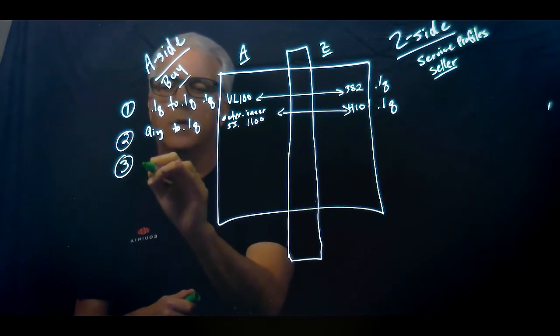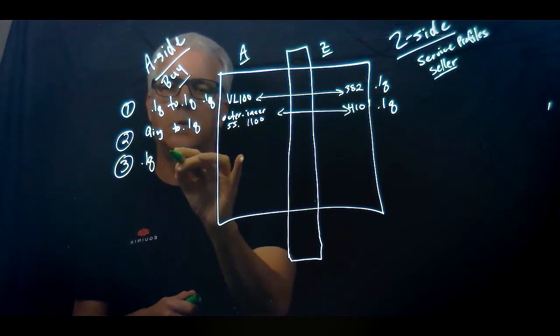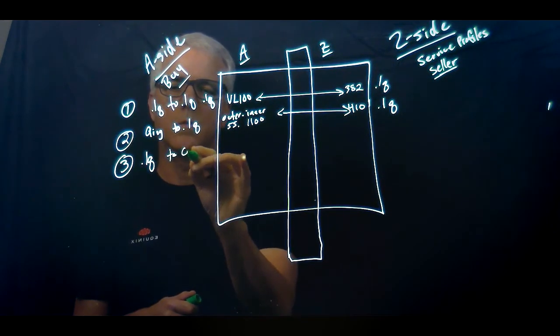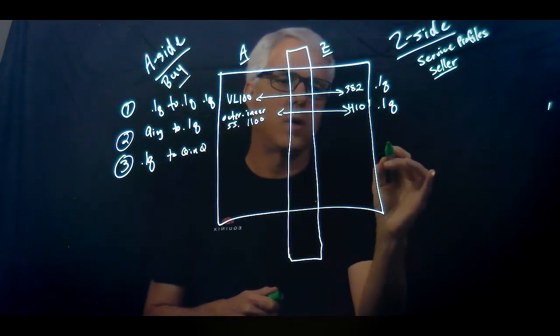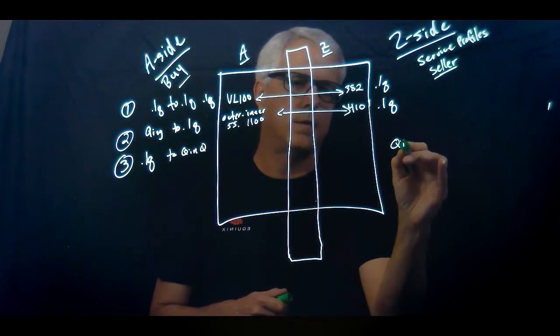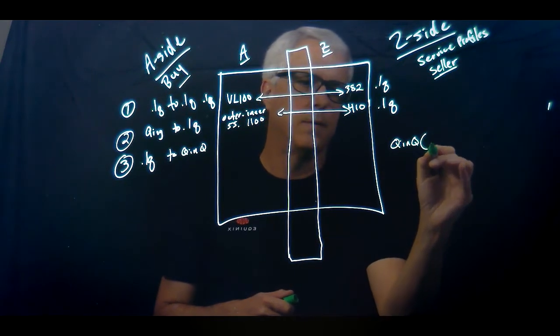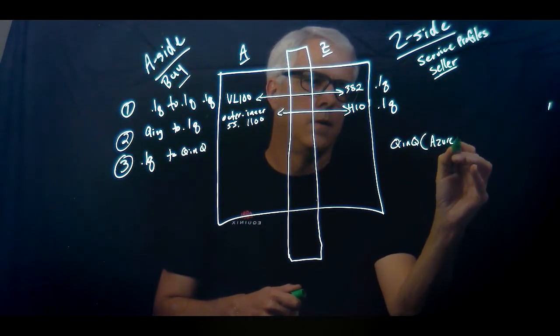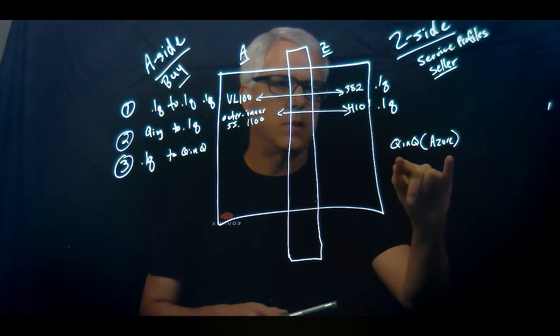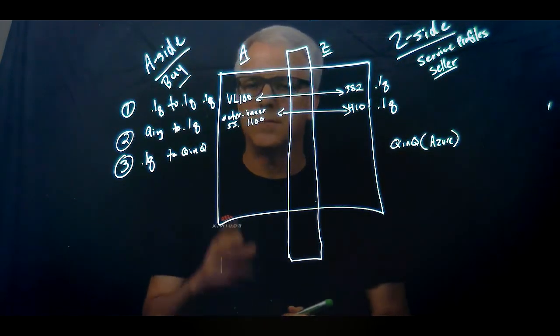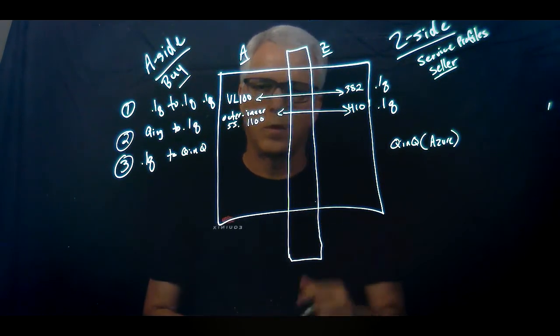Third scenario is this one in reverse. I've got .1Q to Q-in-Q. In this scenario, the main one on this side is Azure. It's the way Azure does it. The other range of cloud providers are .1Q on the Z side, but Azure does Q-in-Q. And I'll talk about in a second one of the reasons they do it.